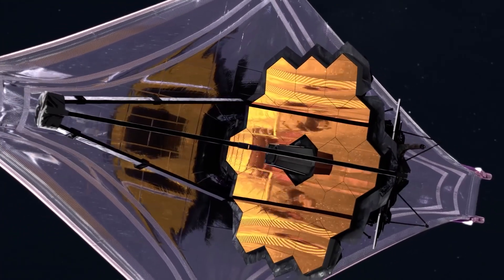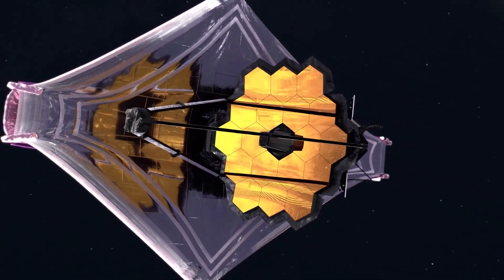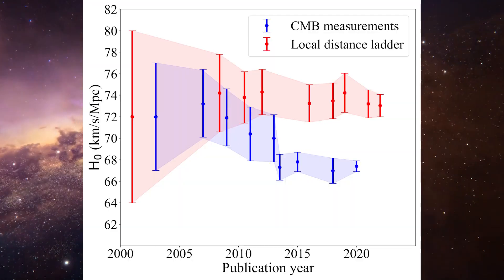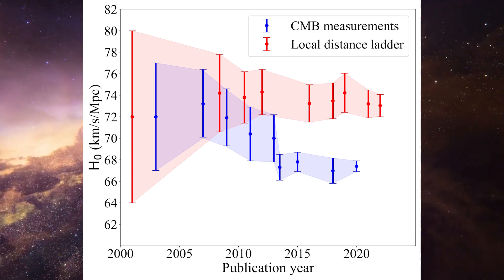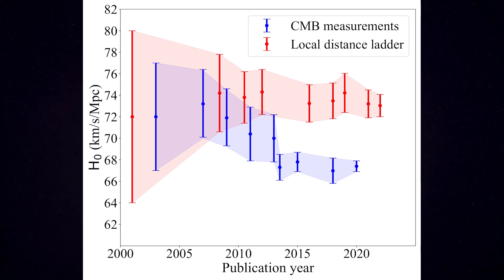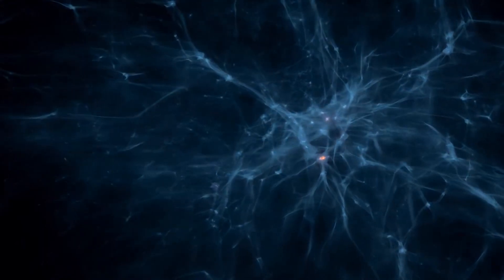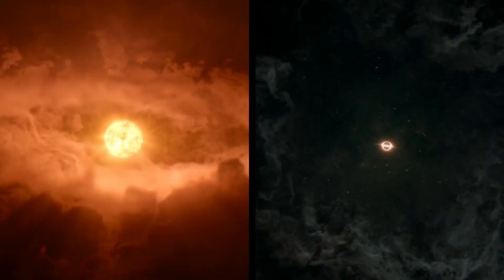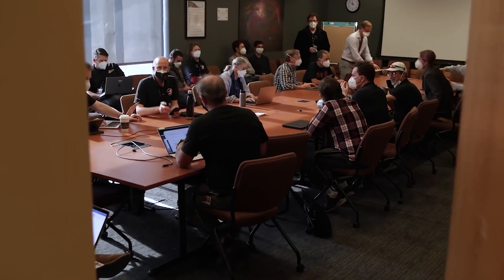Yet, data from the James Webb Space Telescope has upended this cosmic narrative. It unveiled galaxies that defied expectations, growing exceptionally large and forming at an accelerated pace, challenging the standard model's predictions. This revelation exacerbated the long-standing enigma known as the Hubble tension. Hopes for resolution through refined data and extensive observations were dashed. Instead, the anomalies intensified.